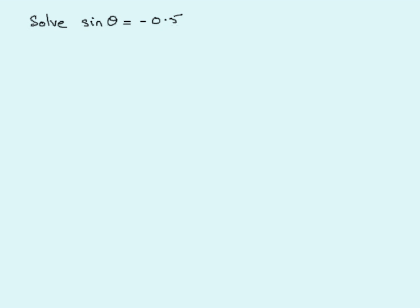Welcome to this tutorial on how to solve a trig equation. The example I've picked is sine of an angle theta equals a negative number, minus 0.5, and the method I'm going to use is called the quadrant method.